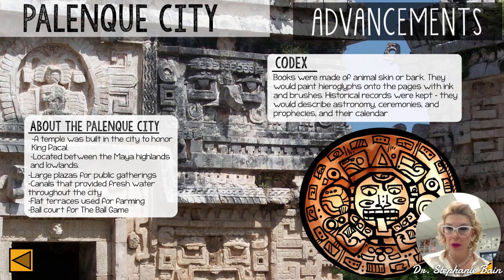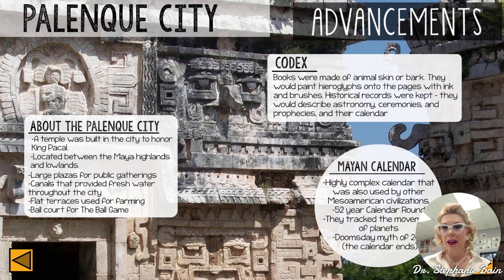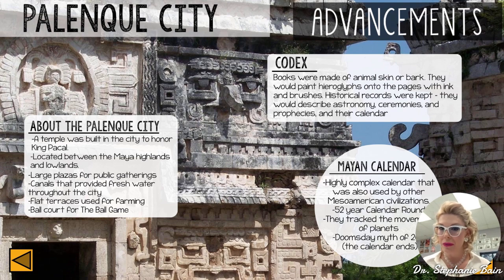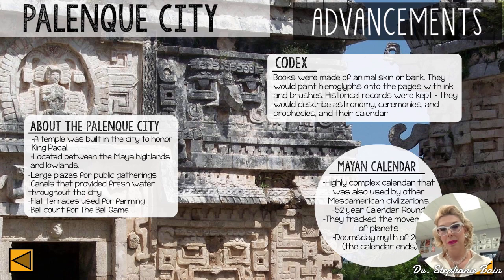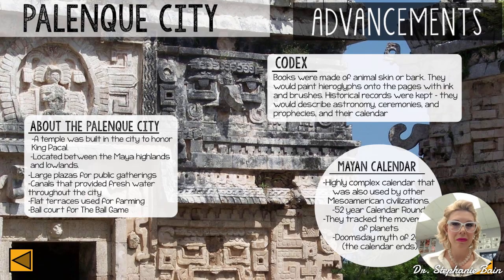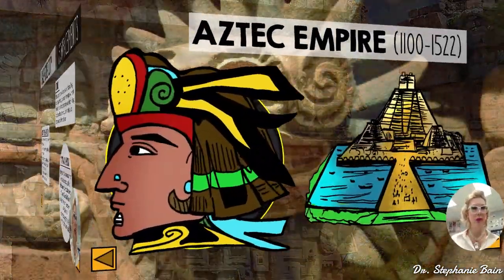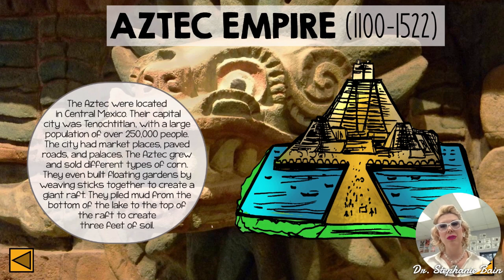The Maya codex kept detailed records, and the Mayan calendar was a highly complex calendar also used by other Mesoamerican civilizations. It featured a 52-year calendar round and tracked the movements of planets. Many people thought the world would end in 2012 when the Mayan calendar ended — but thankfully it did not. Now turning to the Aztecs, who were at the height of their power from 1100 to 1520.